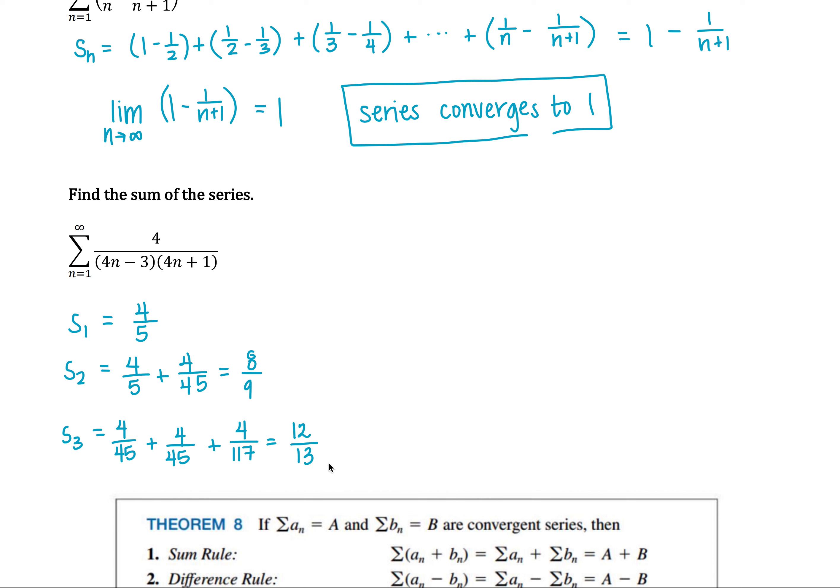You can, by induction, show that the nth partial sum is 4n over 4n plus 1. And I have that in my written notes, and you're welcome to read through that. It's just using some algebra, so there's nothing too complicated with it.